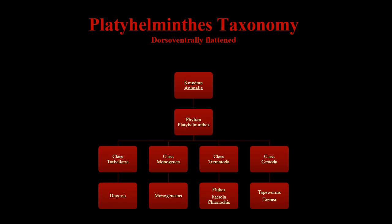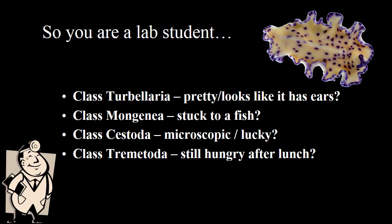The first phylum we'll look at is Platyhelminthes, the flatworms. This phylum is characterized by having thin bodies that are flattened dorsal-ventrally. There are four classes in this phylum. We will spend the majority of our time on three of them. The fourth class, Monogenea, we will only look at briefly — the book lumps them in with the trematodes, as they are just infections on fish.